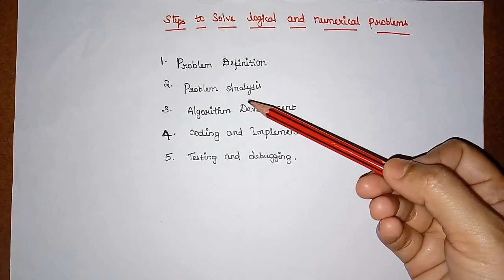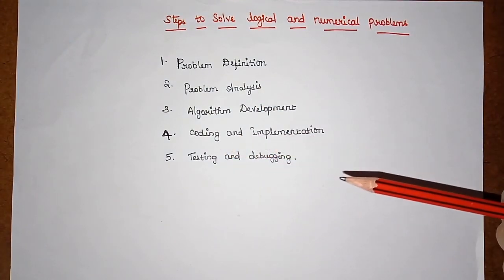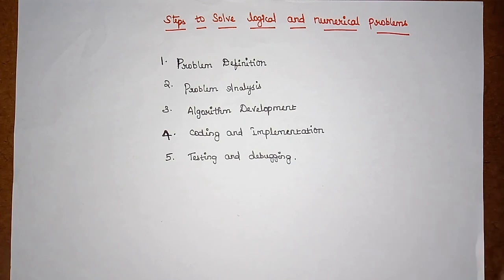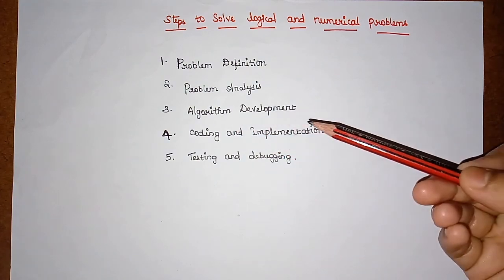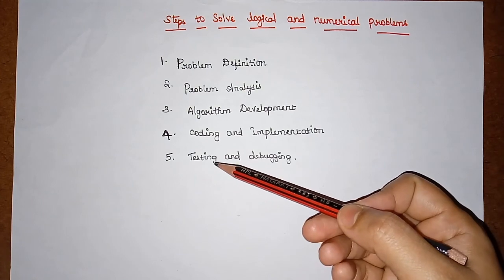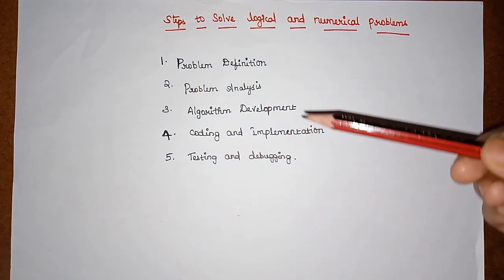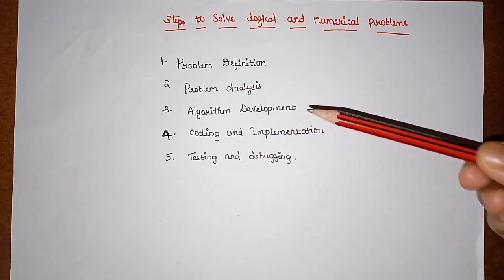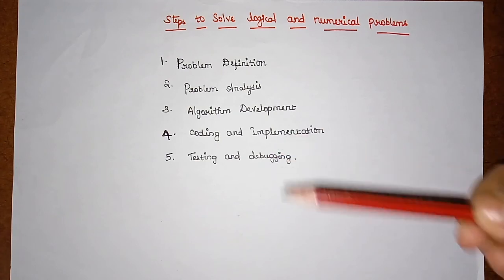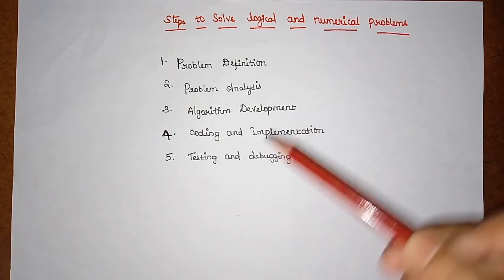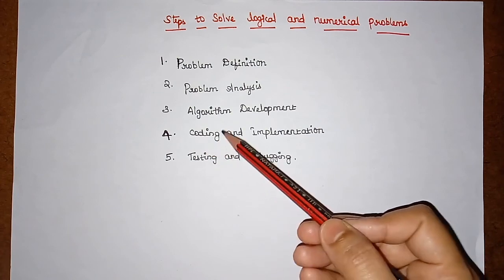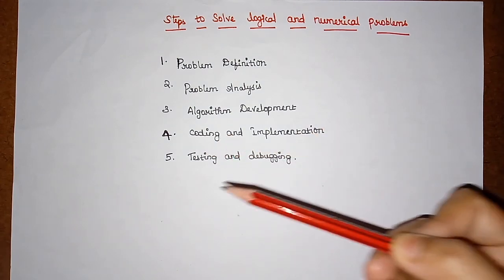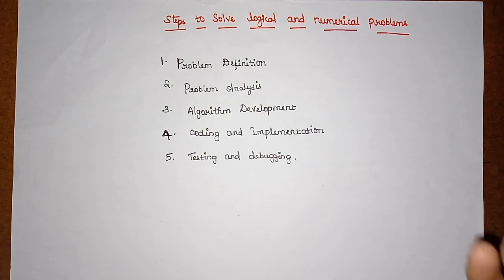These resources should be analyzed before writing a program or providing a solution for a problem. The third step is algorithm development, where we write step-by-step instructions explaining how to solve the problem. The fourth step is coding and implementation — using the algorithm developed in the third phase, we write and implement the code.